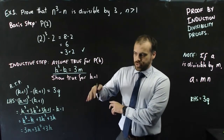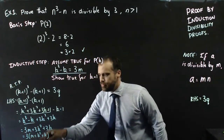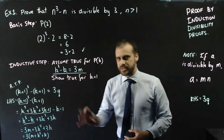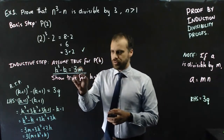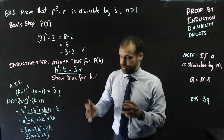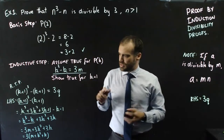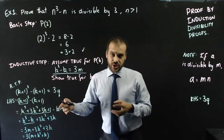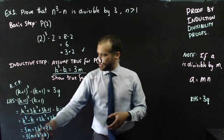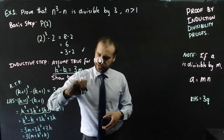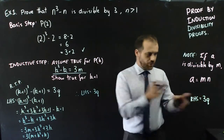You might see it: 3m, 3k squared, 3k — we can factorize. That gives us 3 times (m plus k squared plus k). The important thing to know is that m plus k squared plus k is an integer — a whole number — because m is a whole number from our assumption, and k is also a whole number. So 3 times a whole number means this is divisible by 3. We can replace that integer with q, giving left-hand side equals 3q, which equals the right-hand side.